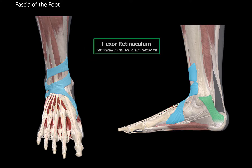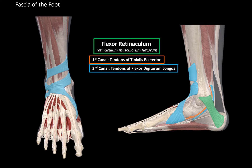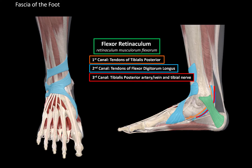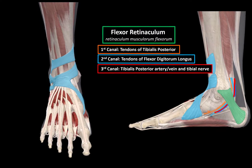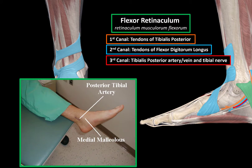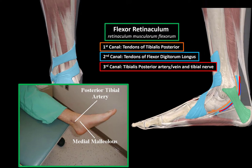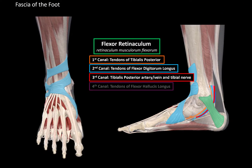On the medial side, we can find the flexor retinacula. Underneath the flexor retinacula there are canals for the tendons and vasculature: the first canal for the tibialis posterior tendons, the second for the flexor digitorum longus tendons, and the third for the posterior tibial artery, vein, and tibial nerve — clinically important because we can palpate the posterior tibial pulse right behind the medial malleolus. The fourth canal contains the tendons of the flexor hallucis longus.